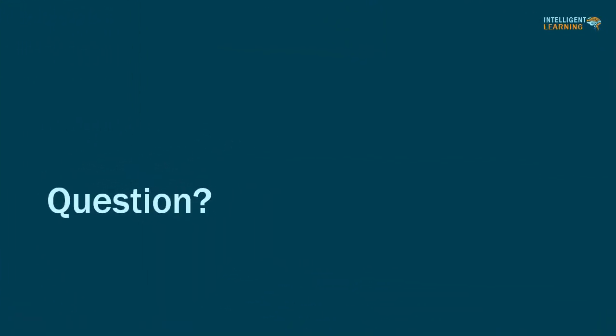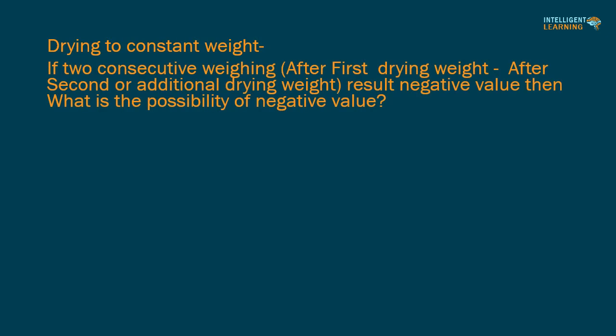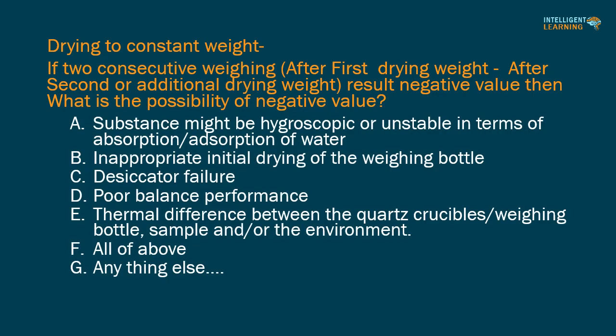Question of this video: regarding drying to constant weight — if two consecutive weighings (after first drying weight minus after second or additional drying weight) result in a negative value, what is the possibility of a negative value? A. The substance might be hygroscopic or unstable in terms of absorption/adsorption of water. B. Inappropriate initial drying of the weighing bottle. C. Desiccator failure. D. Poor balance performance. E. Thermal difference between the quartz crucibles, weighing bottle, sample, and/or the environment. F. All of the above. G. Anything else? Please give your answer in the comment section below.